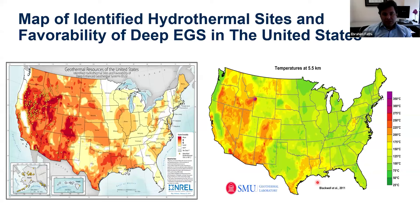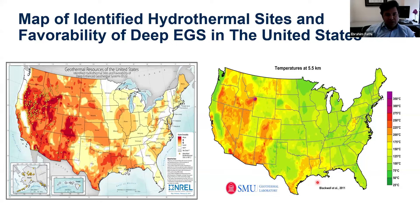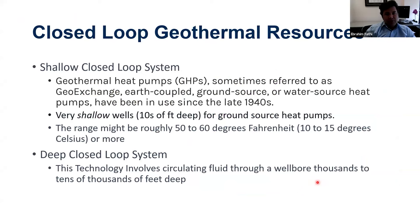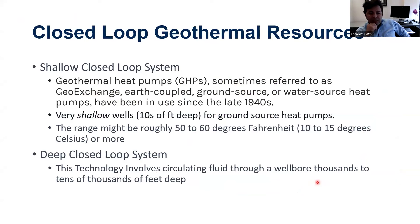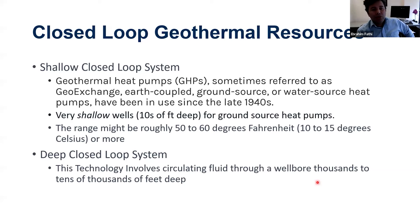That is a quick wrap-up on conventional geothermal systems; we will cover specific project details next week, including drilling type, completion, and processing. This week we focus on definitions and general aspects. The second type of geothermal system is the closed-loop geothermal. It is divided into two categories: shallow closed-loop systems and deep closed-loop systems.